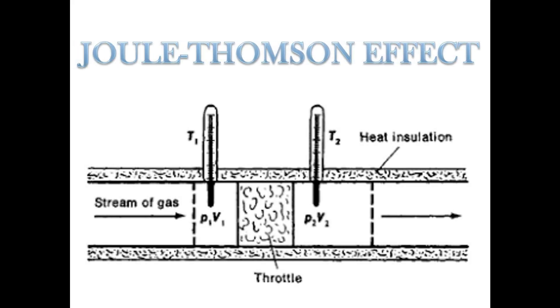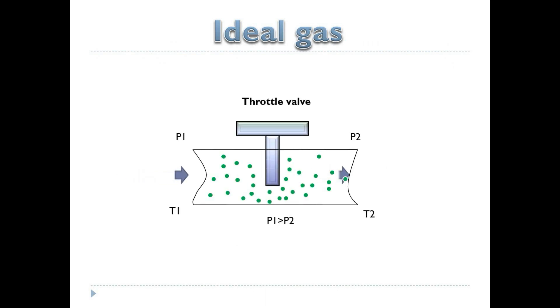When an ideal gas is passed through a throttling wall at constant enthalpy, the temperature of the gas entering remains same as the temperature of the gas coming out, that is T1 is equal to T2. But this is not same in the case of real gases.